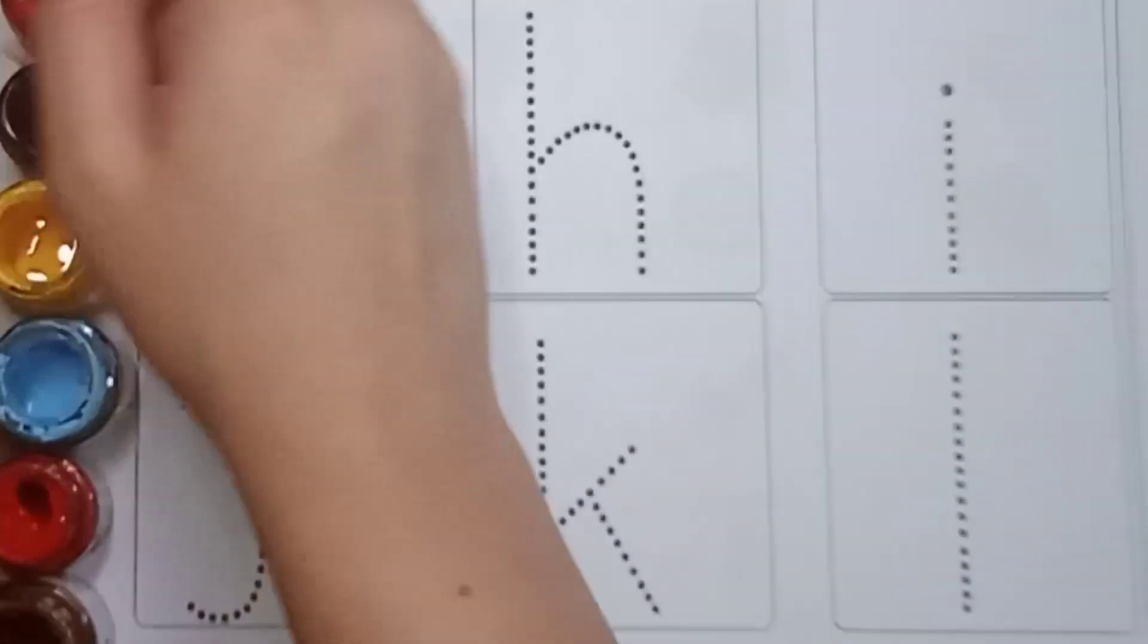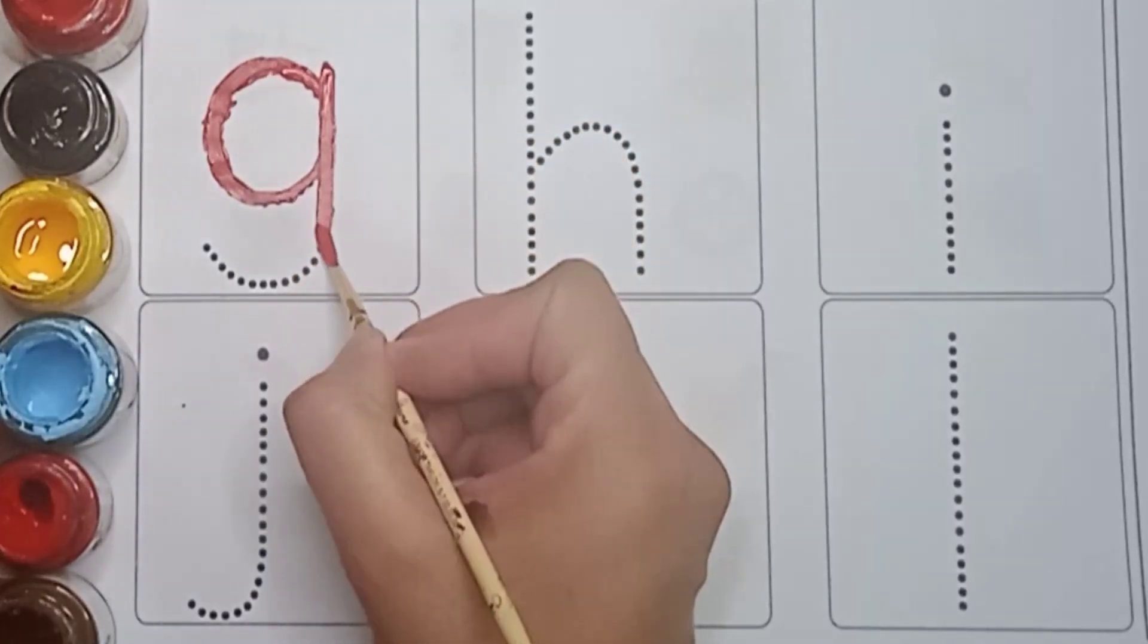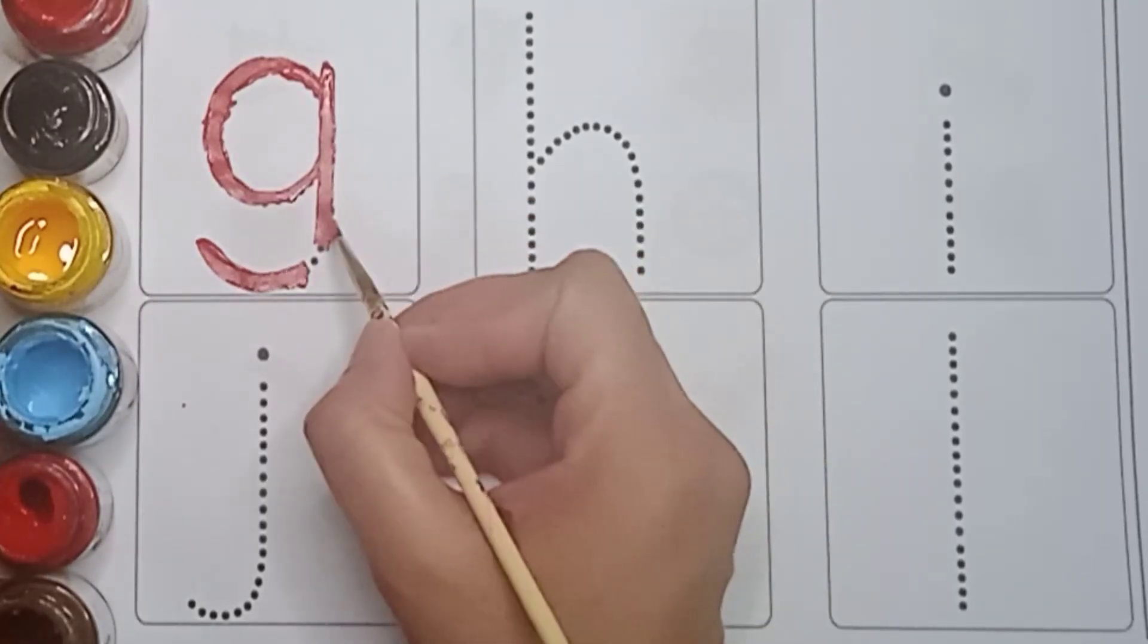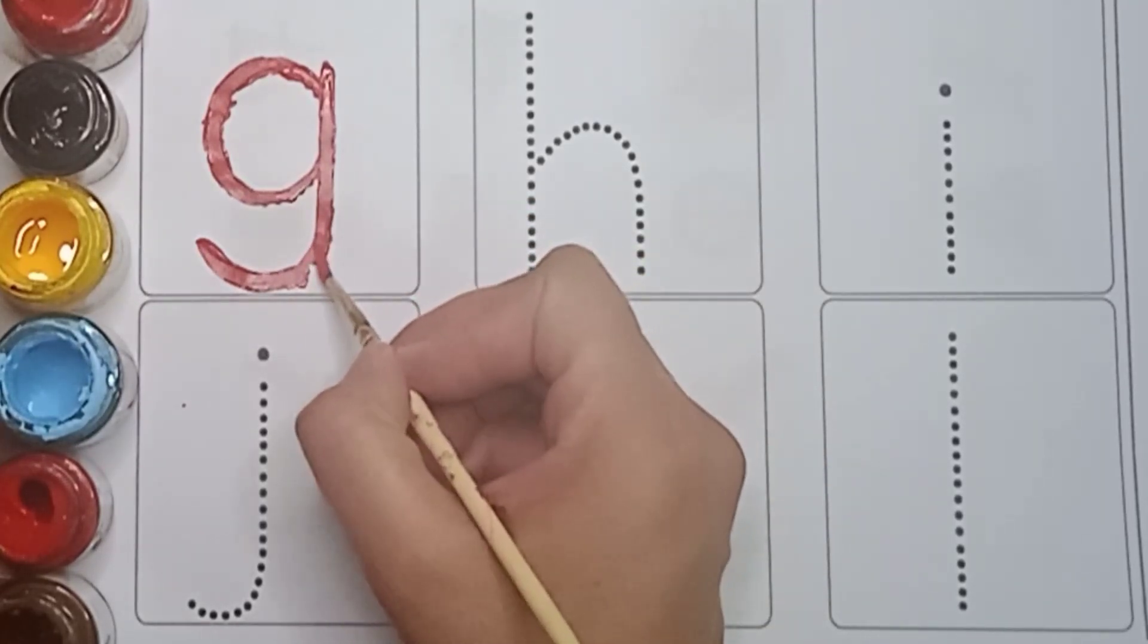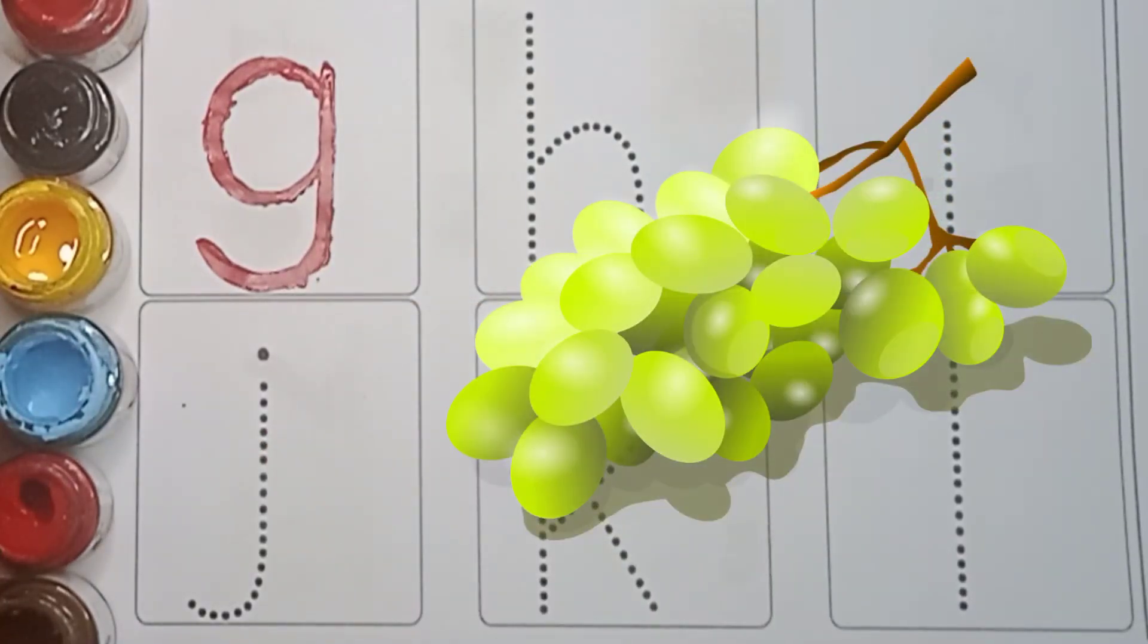And now standing line like this. And curve like this. It's G. G. G is for Grapes. G is for Grapes.